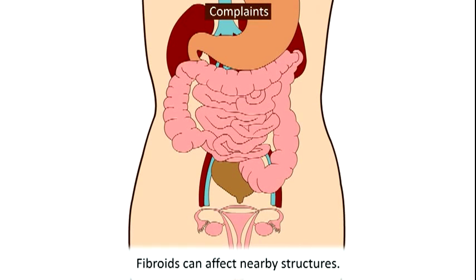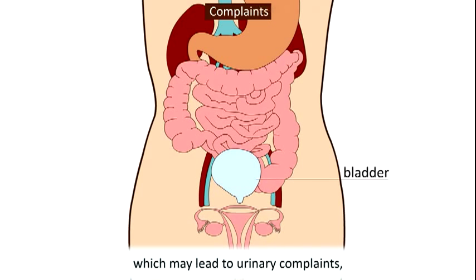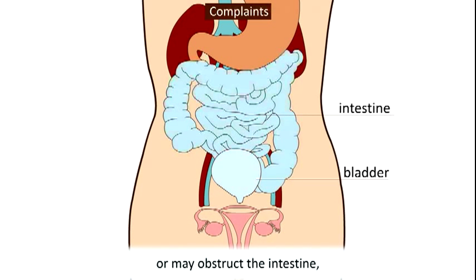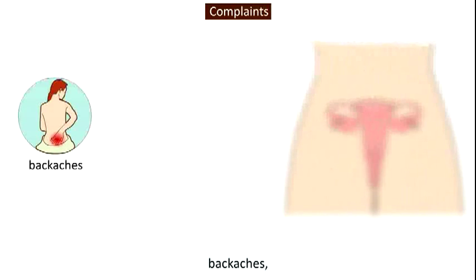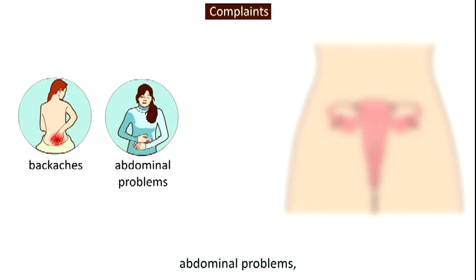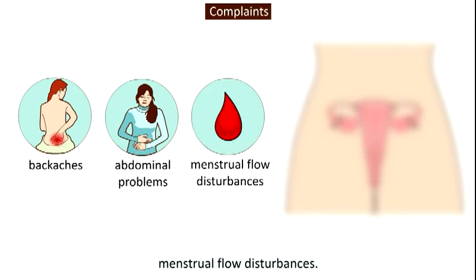Fibroids can affect nearby structures. They can cause compression of the bladder, which may lead to urinary complaints, or may obstruct the intestine, which may result in constipation. Other complaints can be backaches, abdominal problems, and menstrual flow disturbances.